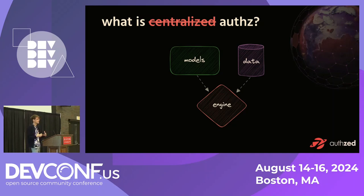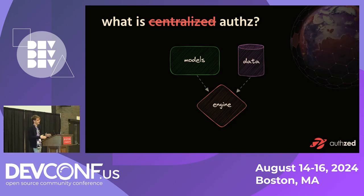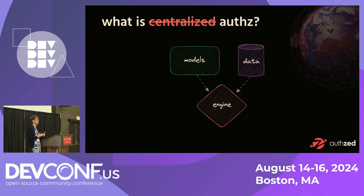A concrete example: think of a courtroom. The models are laws — laws of the land, written in stone, that's what you work with. Then there are facts and evidence in the case being tried — that's the data. And then you have a judge or jury that applies the laws to the evidence and makes a decision on whether someone has committed a crime.